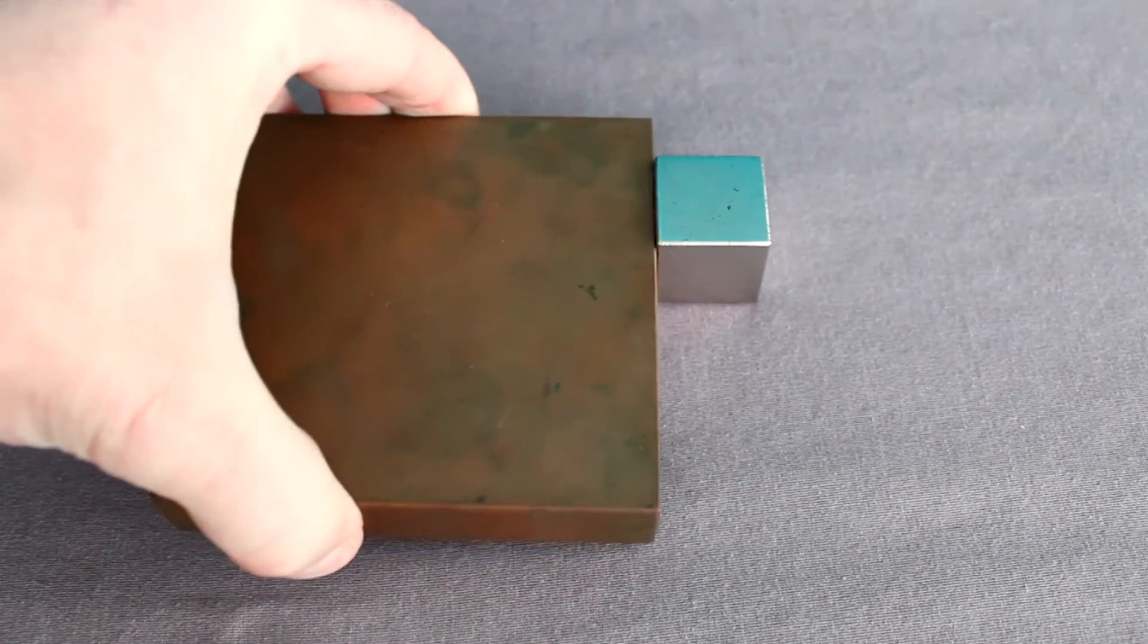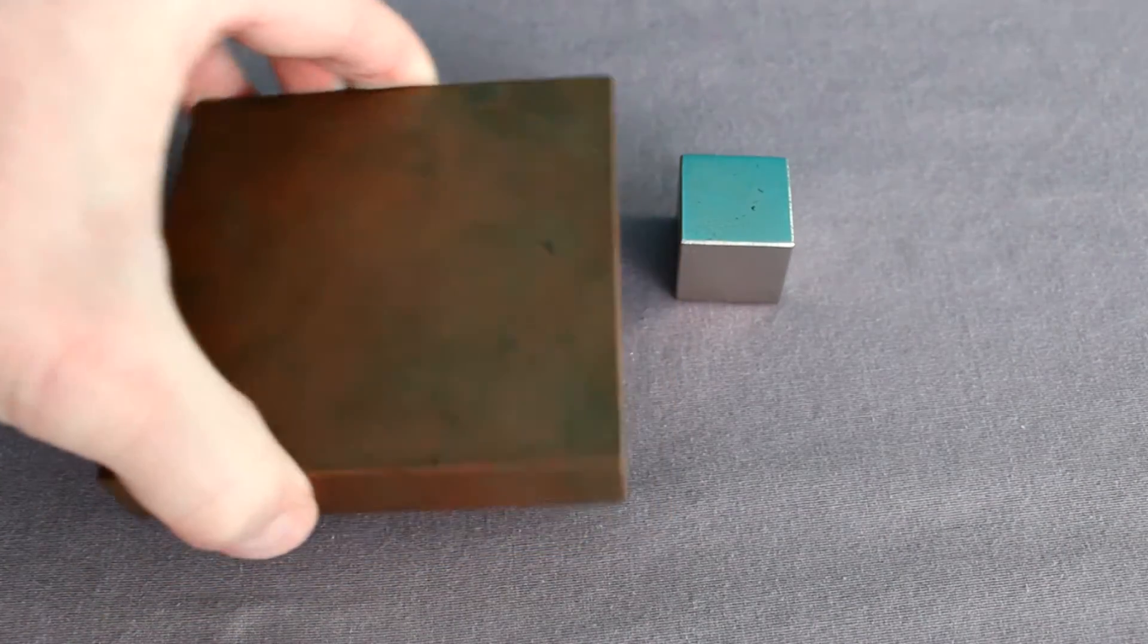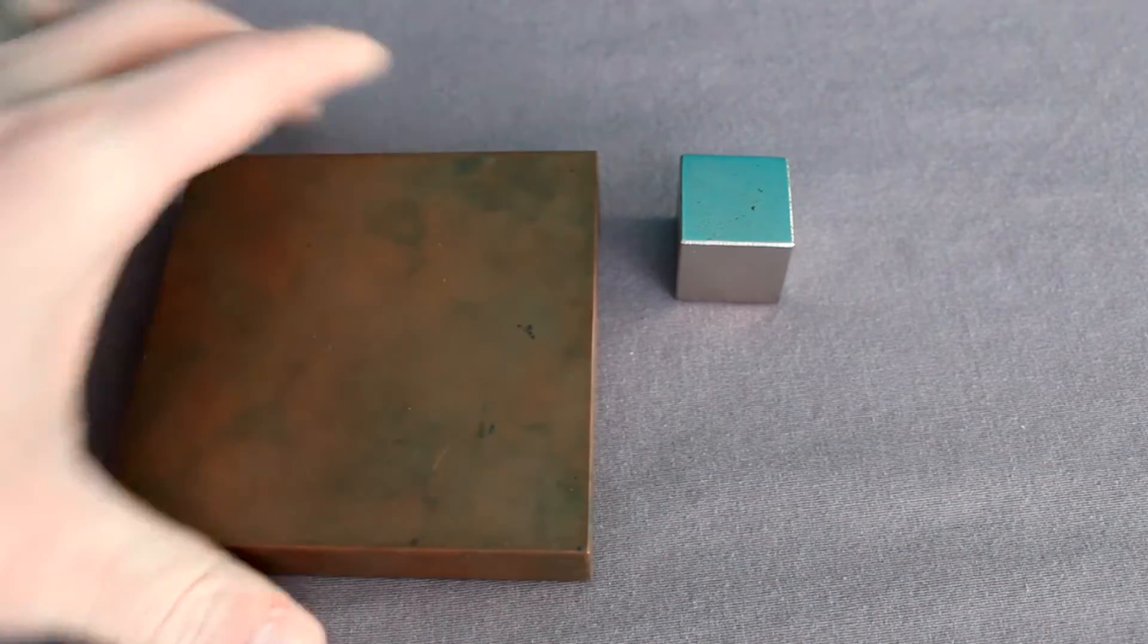But when I place it next to the copper, well, not much is happening. Copper is not something that's attracted to a magnet. But now, watch what happens when I drop it on the copper.